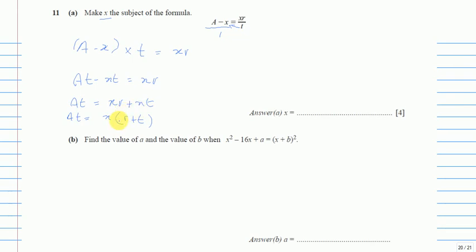Now (r + t) is being multiplied with x, so on the other side it will be divided. Our next step will be at over (r + t) equals x, and this is the answer.